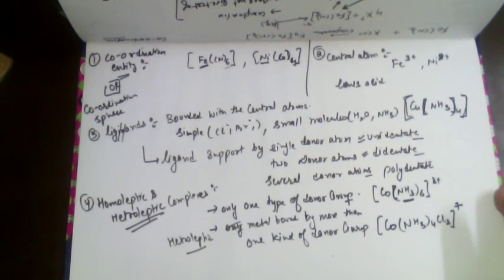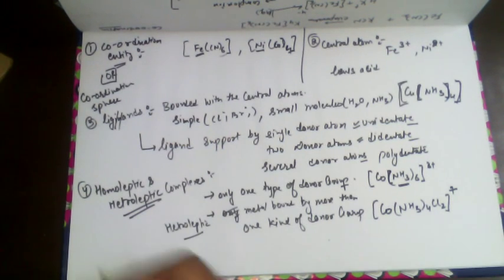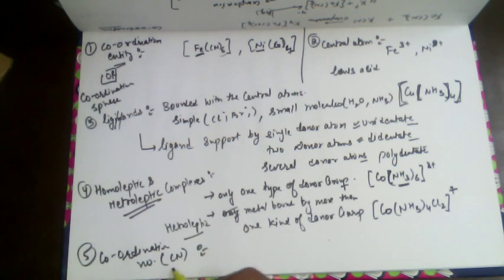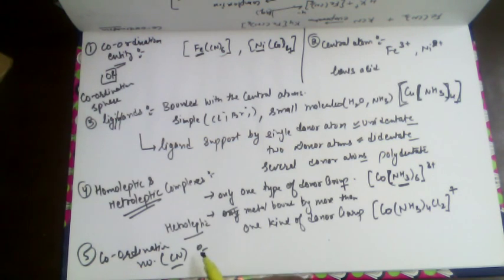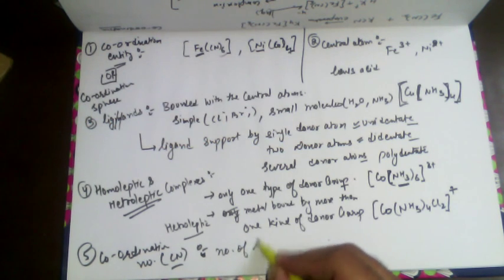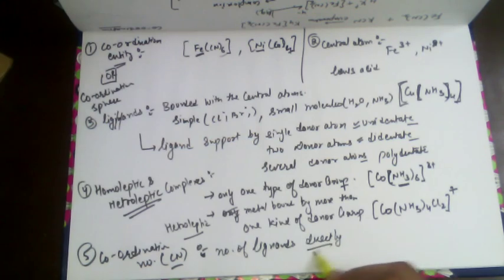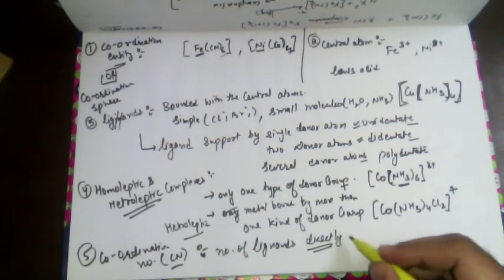Next we have the coordination number, sometimes denoted as CN. The coordination number of a metal in a complex can be defined as the number of ligands directly bonded with the central atom. If a ligand is not directly bonded with the central atom, it does not count toward the coordination number.